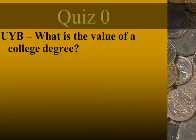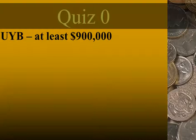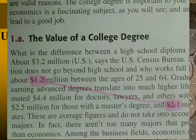What about that first UIB question — 'what is the value of a college degree?' The answer I'm looking for is at least nine hundred thousand dollars. If your immediate reaction is 'what? I never saw nine hundred thousand dollars listed anywhere in this chapter,' well of course not — it's not that kind of question. This is a use your brain question.